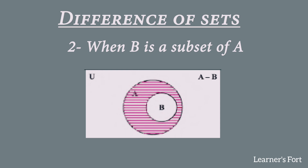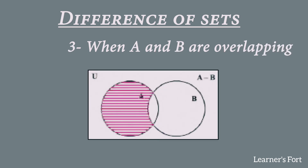The third case for difference is when A and B are overlapping sets and we perform A minus B. Only the elements common between A and B are subtracted. I have shaded only the portion of A, excluding the overlapping portion and excluding set B. The non-overlapping portion of A represents the elements that remain after performing A minus B.